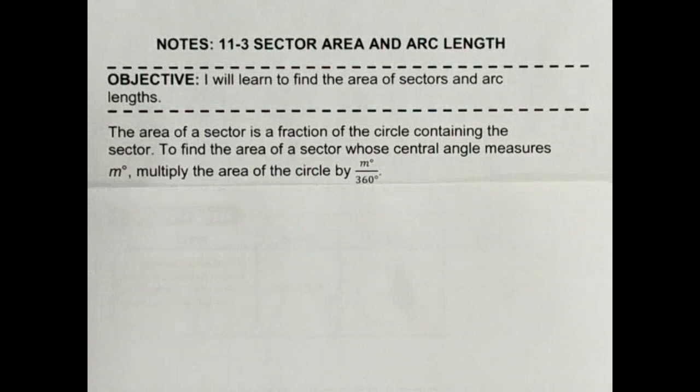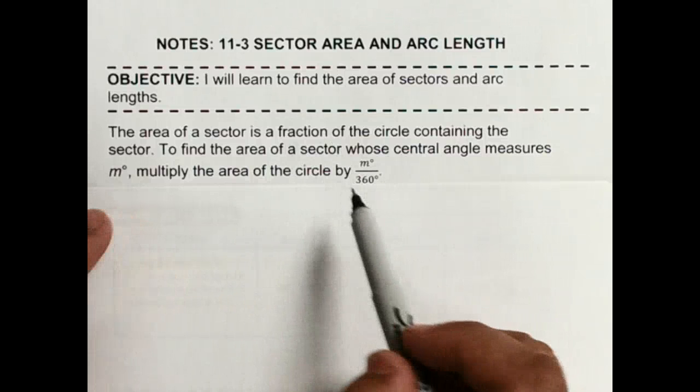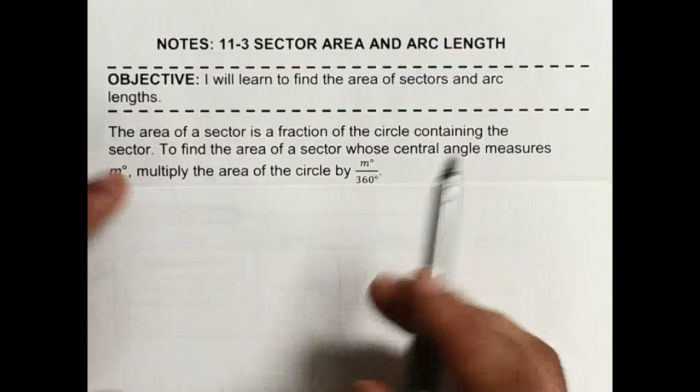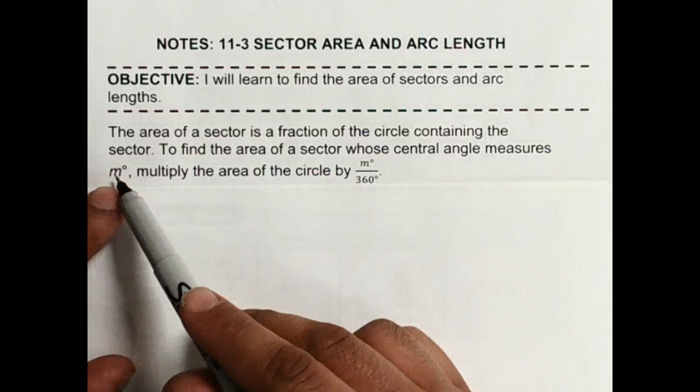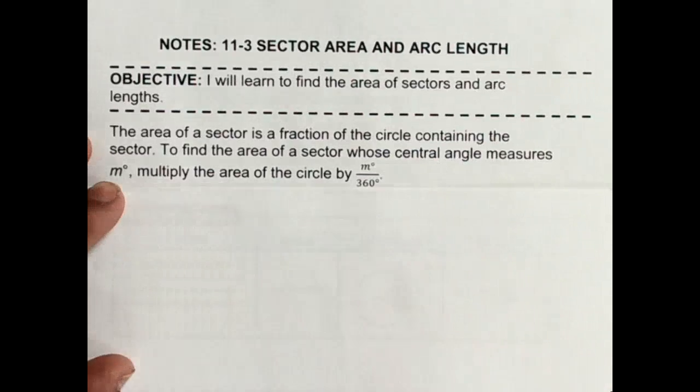The area of a sector is basically a fraction where we use the fact that there's 360 degrees if I go all the way around the circle. And so I want just a portion of that, so that's where this M comes from. I want M degrees, so I create this fraction using a central angle.